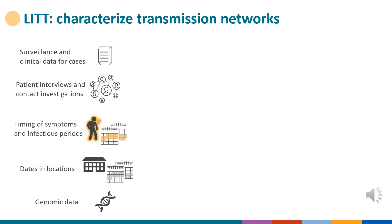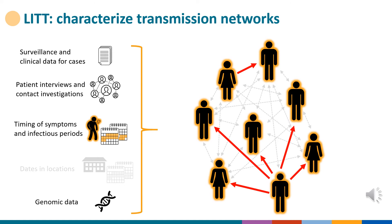Next, the Logically Inferred Tuberculosis Transmission algorithm, or LIT, is primarily an automated data analysis tool designed to characterize transmission networks. LIT analyses can involve surveillance and clinical data for cases, epidemiologic links from patient interviews and contact investigations, chronology data on the timing of symptoms and infectious periods, and genomic data used to estimate the relatedness of pathogen isolates collected from patients. LIT applies a hierarchy of evaluation criteria, including filtering, scoring, and weighting of input data, as well as decision rules modeled on those applied by public health practitioners in the field to characterize TB transmission networks.